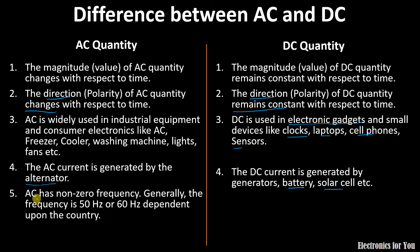The third difference is AC has non-zero frequency. In case of our power supply, generally, the frequency is 50 Hz and in some countries, it is 60 Hz also. But in case of DC, as DC is not a waveform, it is just a constant wave so it has zero frequency. This is the difference between AC and DC.